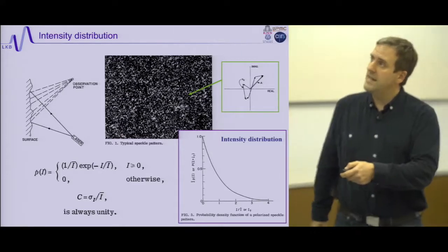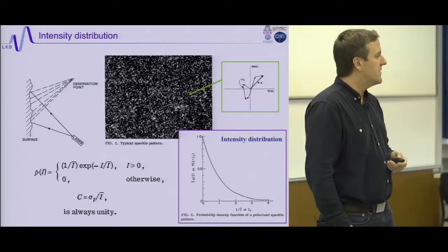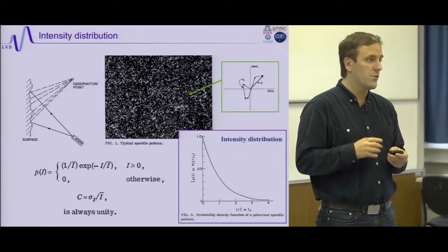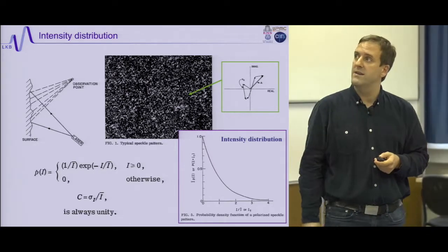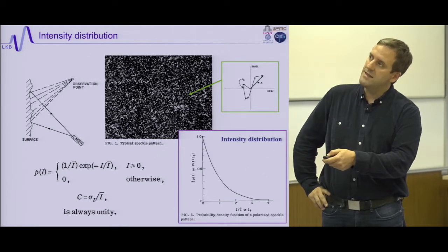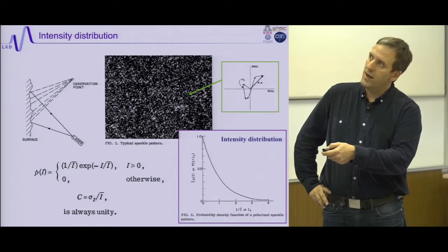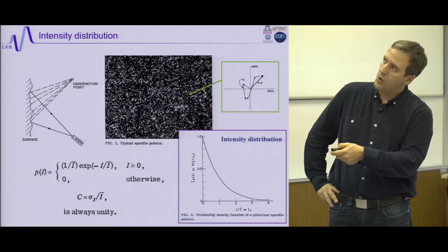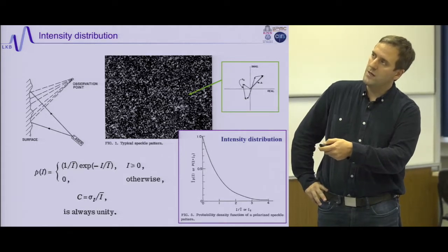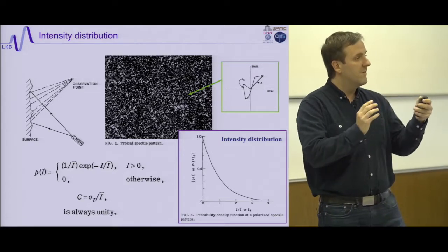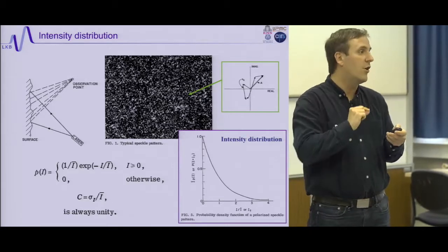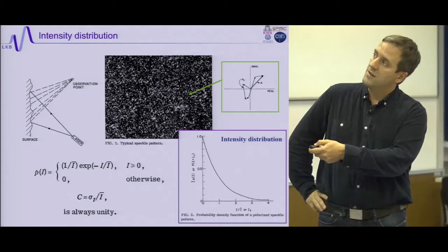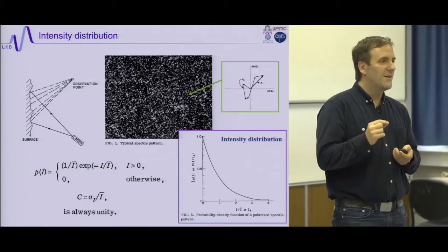What happens when I shine light on a complicated medium — in Goodman's article the medium is a rough surface, but speckle formation is universal and valid for surfaces or volumes? I consider one observation point. Light is reflected or scattered in the medium and reaches that detector. Each observation point receives light from all points of the surface but with a random phase, because the surface is rough or the medium is volumetric. Light that exits at any point has a specific amplitude and phase that is very complicated.